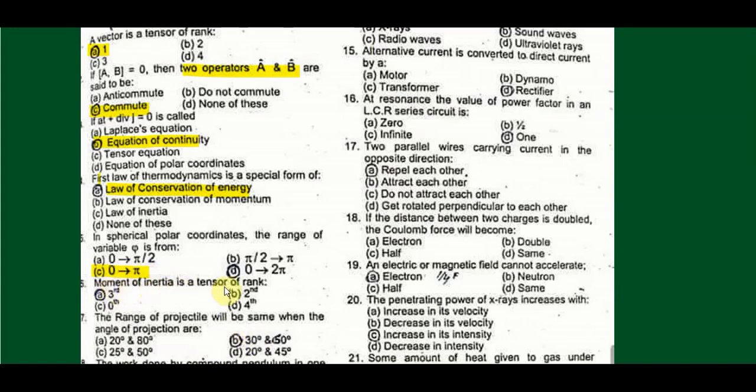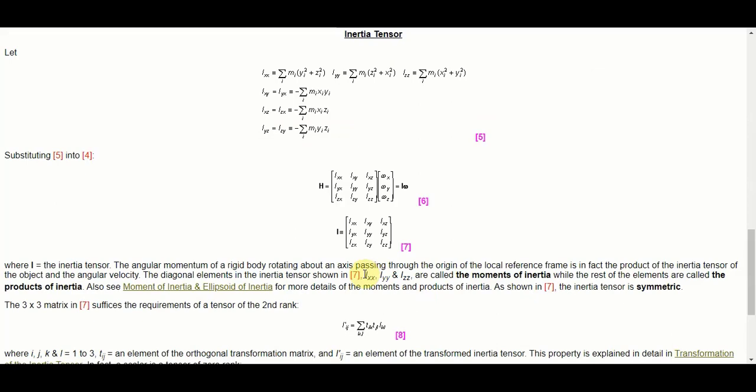Moment of inertia is a tensor of rank: Moment of inertia can be written in matrix form. A three by three matrix represents moment of inertia. This also fulfills the requirement of second rank tensor.